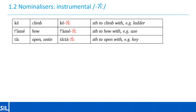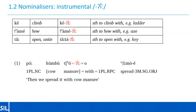Turning now to the instrumental nominalizer 'ing'. This is a productive suffix which attaches to verbs. So 'ge' meaning climb becomes 'ge-ing' — something used for climbing, typically a ladder. 'Ame' meaning hew becomes 'ame-ing' — something to hew with, like an axe. The verb stem to which the instrumental morpheme attaches can be reduplicated to indicate a repeated action, so 'da-da-ing' is something regularly used for opening something such as a key, rather than something improvised as a one-off opener.